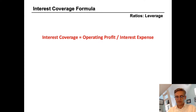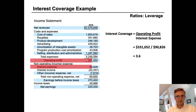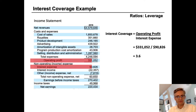So let's look at an example using Hasbro. Here's Hasbro's 2018 income statement. We can see that operating profit is $331 million and interest expense is $91 million.